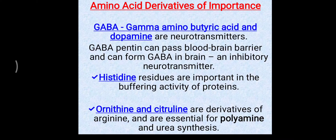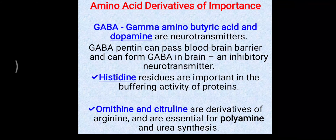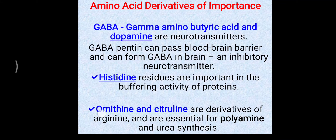Ornithine and citrulline are called non-protein amino acids — they are not present in proteins and are derived from arginine, which is a basic amino acid. These are intermediates of the urea cycle. From ornithine, a polyamine called putrescine is derived, which plays various roles in cell regulation and cell growth.